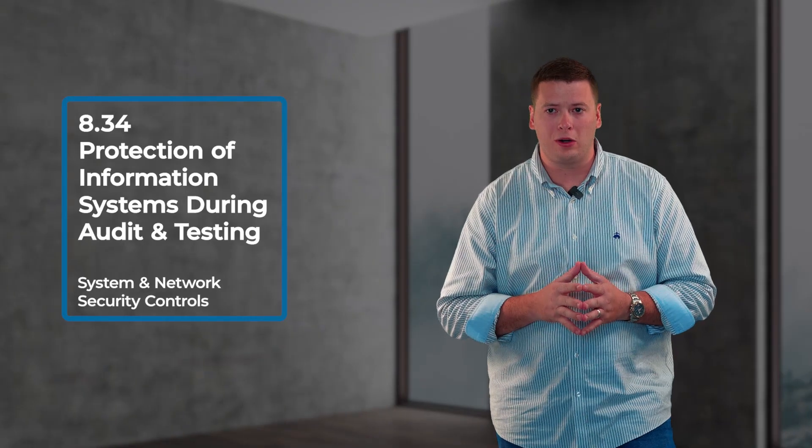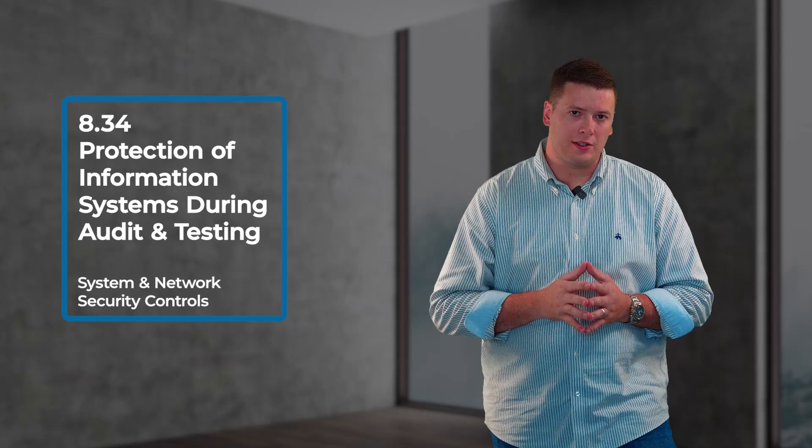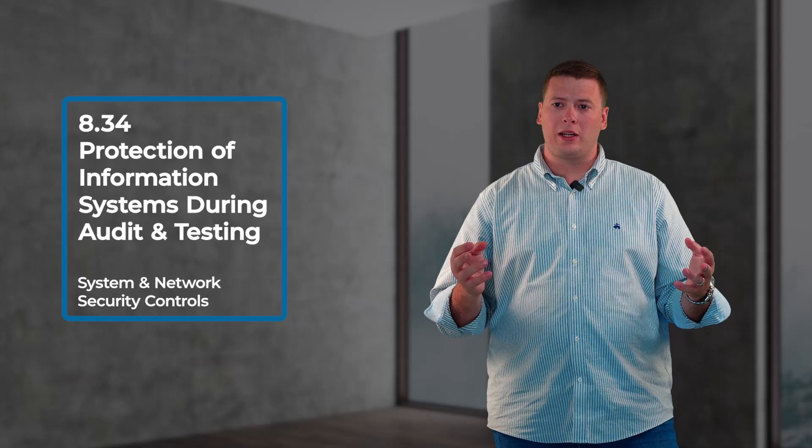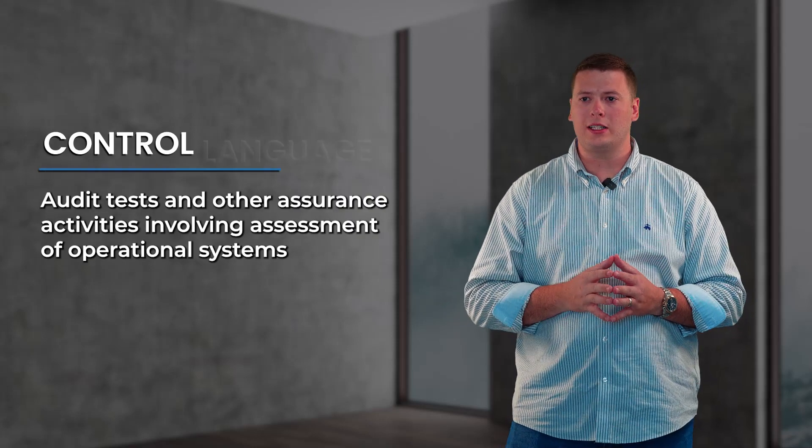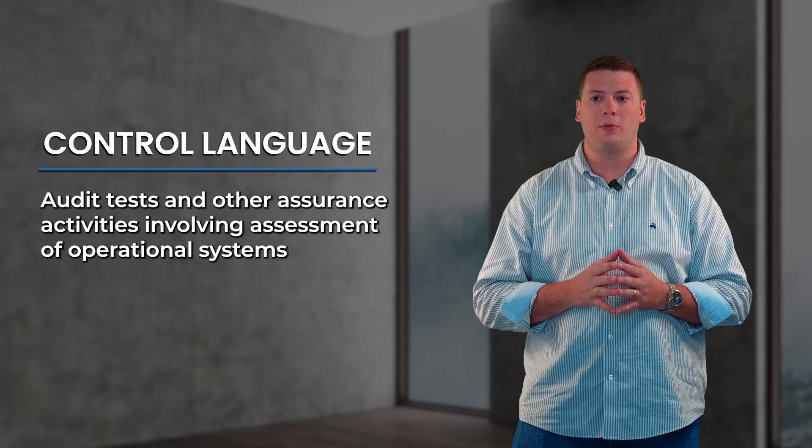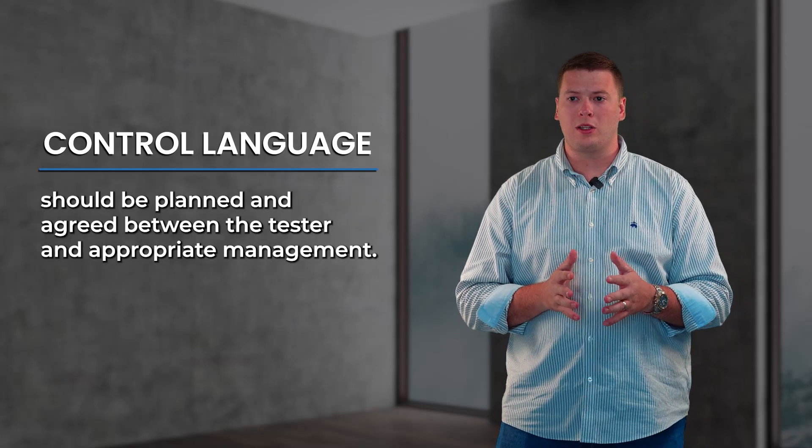The last control is 8.34, protection of information systems during audit and testing. This control makes sure you are protecting your systems any time you plan to audit, touch, or inspect those systems. The control states audit tests and other assurance activities involving assessment of operational systems should be planned and agreed between the tester and appropriate management. Essentially, don't do things that will interrupt business operations without the right people being aware. Make sure you are reducing the overhead and burden on the organization to accommodate these tests and assurance audits to the extent possible.